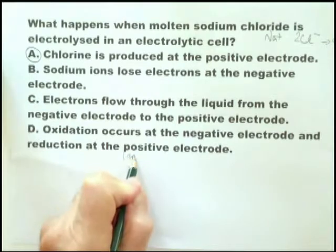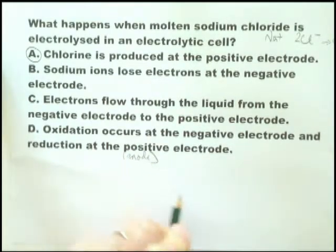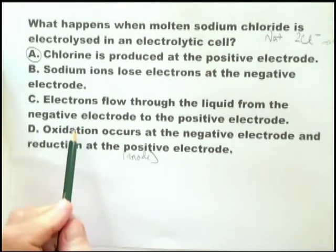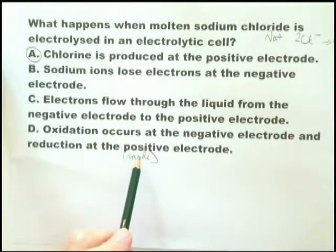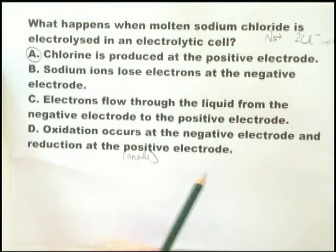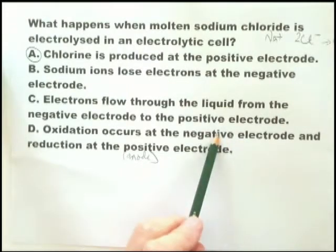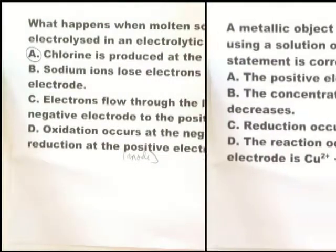You have to remember that oxidation occurs at the positive electrode — that's also the anode. Therefore, reduction occurs at the negative electrode, which is the cathode.